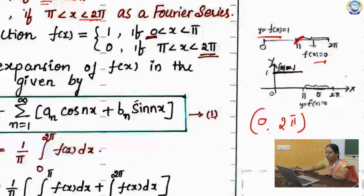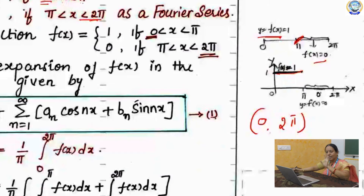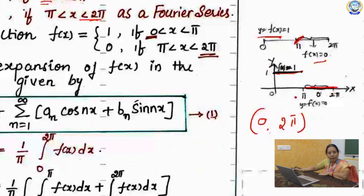f of x equals to 1 means from 0 to pi, your function f of x is 1 — I will show it like this. And from pi to 2 pi it is 0, so there is no signal here. This is your f of x; f of x value is 0 on the x-axis from pi to 2 pi.